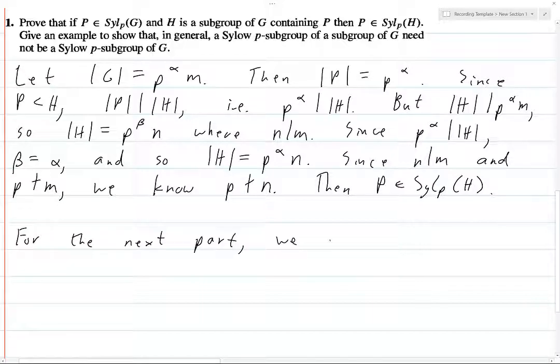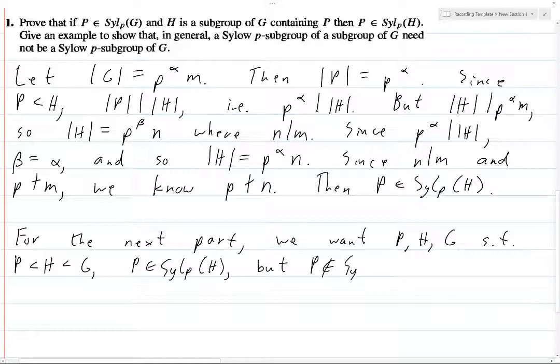We want P, H, and G such that P is a subgroup of H, which is a subgroup of G, P is a subgroup of H, but P is not in Sylow subgroup of G. So this is basically we're flipping Sylow subgroup of H with Sylow subgroup of G from the previous part. In the previous part, we know if we have P contained in H contained in G, and P is in Sylow P of G, then P is in Sylow P of H. And now we're flipping that and showing a counterexample to prove that it doesn't work.